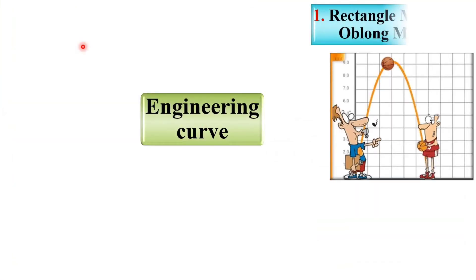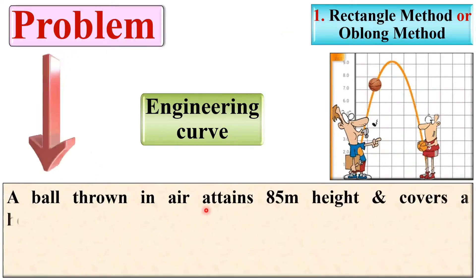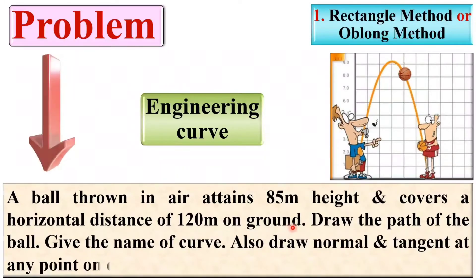Now let us start with the problem description for the rectangle method. A ball thrown in air attains 85 meter height and covers a horizontal distance of 120 meter on ground. Draw the path of the ball, give the name of the curve, also draw normal and tangent at any point on the curve. Now let us solve the problem step by step.